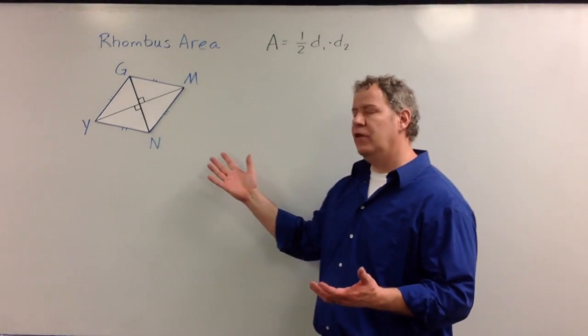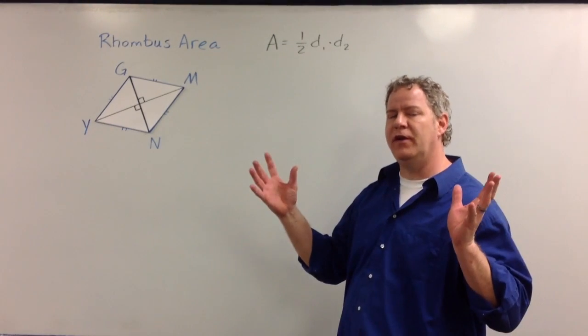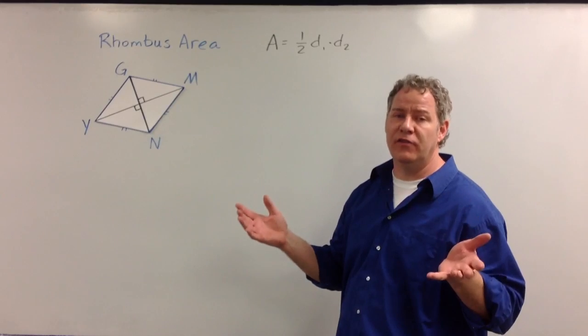So let's suppose I take this rhombus, and I separate the two triangles, and talk about the areas of them separately.